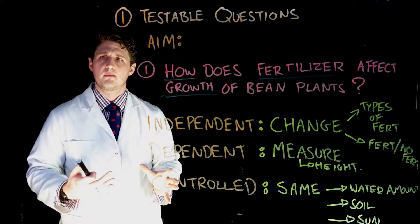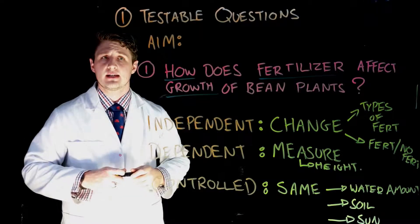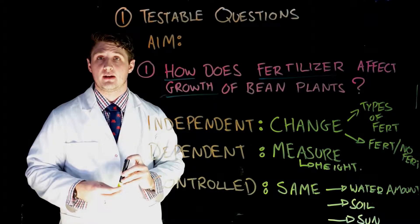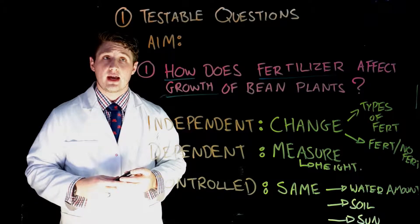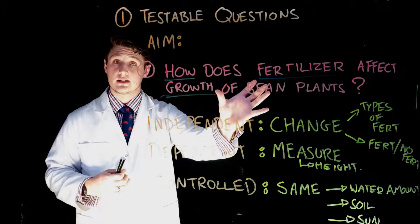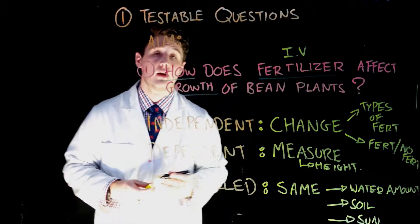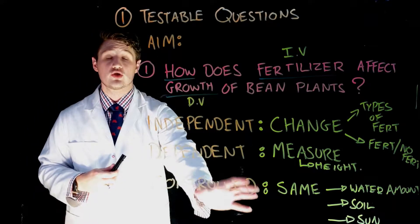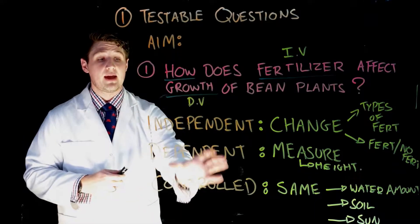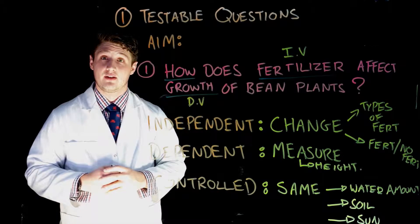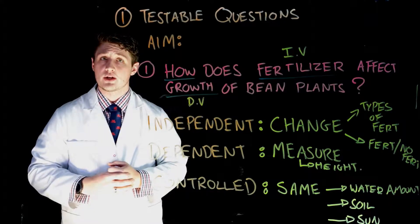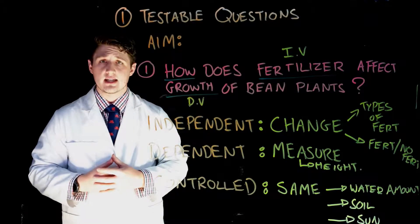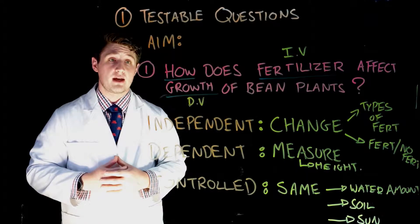Why did I tell you all of this before moving into the method? It's quite important to write a good aim, and we can't write an aim if we don't know how to write a testable question. A testable question must include your independent and dependent variables. Looking at our example: 'How does fertilizer' — the independent variable — 'affect the growth' — the dependent variable — 'of our bean plants?' Control variables are introduced here too, and they'll come in really handy in part three of the scientific method. A testable question must be something you can collect data to answer.